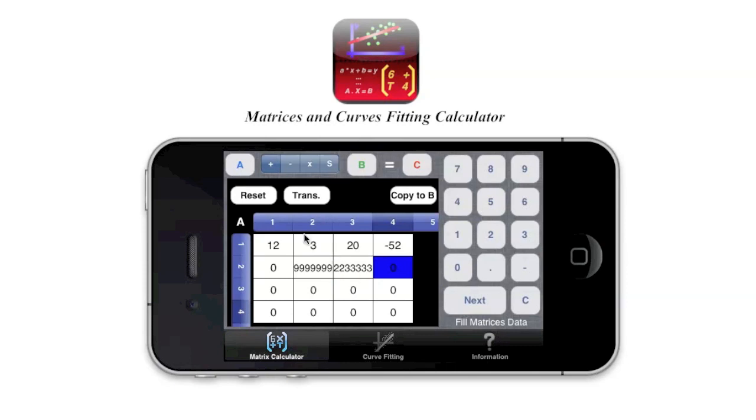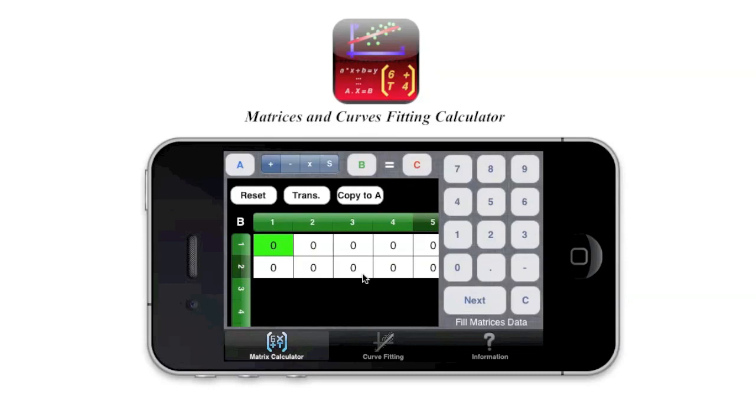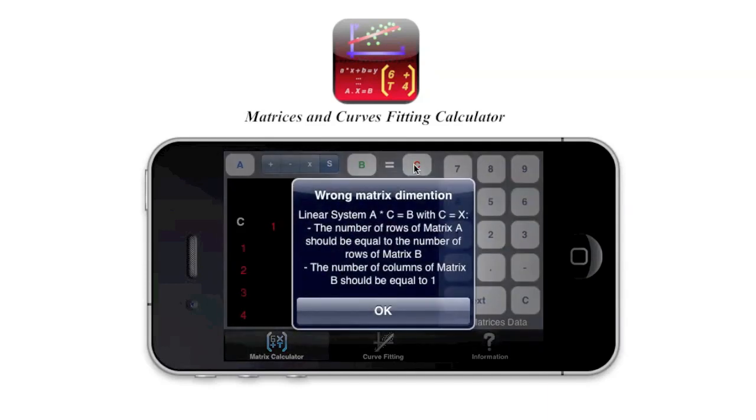Let's try now to do a solve linear system. So basically if I want to, let's do A, I put it like this and B, let's do 5, 2. I might put something wrong here. And the system will tell me actually. I will select solve linear system, S, then I do C. And the system tells you that the number of rows of matrix A should be equal to the number of rows of matrix B, and the number of columns of matrix B should be equal to one.